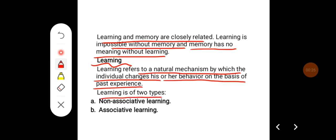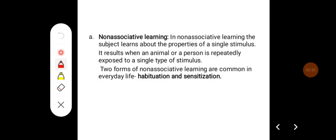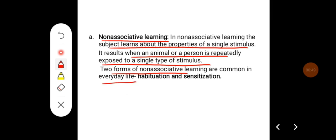Learning is of two types: non-associative learning and associative learning. In non-associative learning, the subject learns about the properties of a single stimulus. It results when an animal or person is repeatedly exposed to a single type of stimulus. Two forms of non-associative learning are common in everyday life: habituation and sensitization.